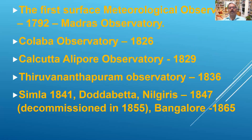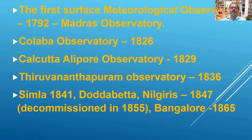We all know that the first surface meteorological observatory was opened at Madras, called the Madras Observatory, in 1792. The Colaba Observatory in Mumbai was started in 1826. The Calcutta Alipore Observatory started in 1829 — even before that observatories existed, but the official ones started in 1829. The Thiruvananthapuram Observatory opened in 1836.